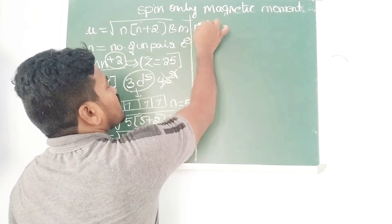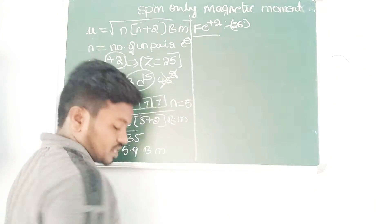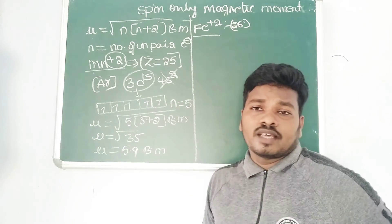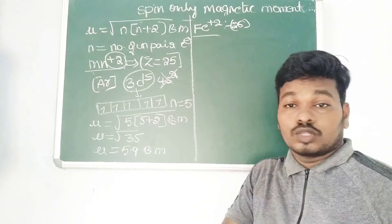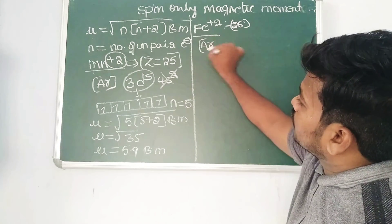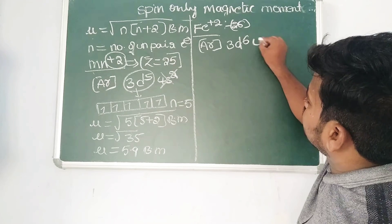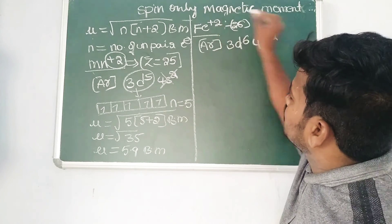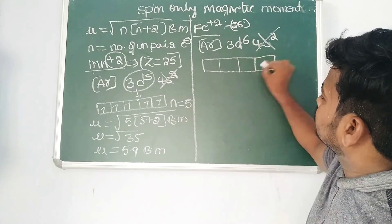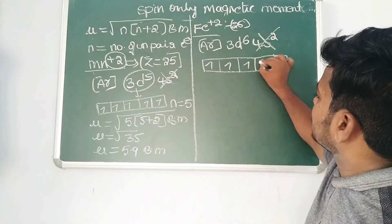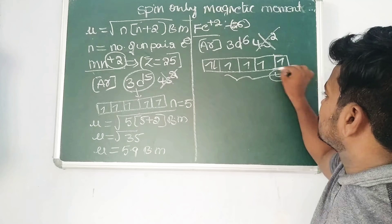Now for Fe²⁺ — iron has atomic number 26. First we write the electronic configuration: [Ar] 3d⁶ 4s². When the ion is +2, remove two electrons; +1, remove one; +3, remove three. For Fe²⁺, removing two electrons from 4s² leaves [Ar] 3d⁶. Counting the electrons in 3d⁶: one, two, three, four, five, six — there are four unpaired electrons.